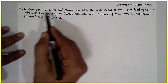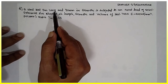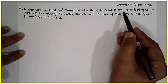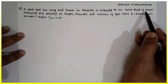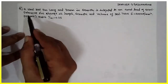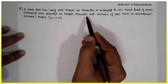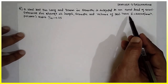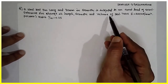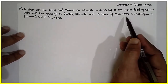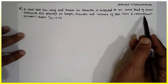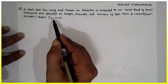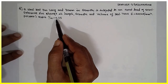A steel rod 5 meters long and 30 mm in diameter is subjected to an axial load of 50 kN. We have to determine the change in length, diameter, and volume. Young's modulus is given as 200 kN per mm square, and Poisson's ratio (1/m) is equal to 0.25.